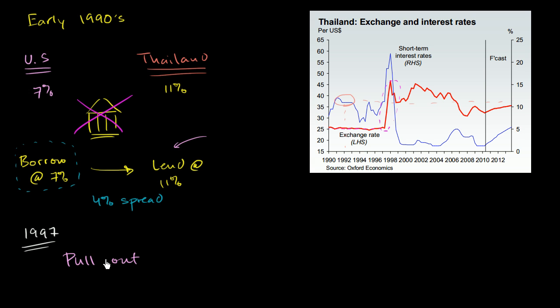This was happening on a massive scale throughout the Thai financial sector — the entire banking sector. So it wasn't just a matter of imports getting expensive. It was a matter of the entire financial system collapsing.